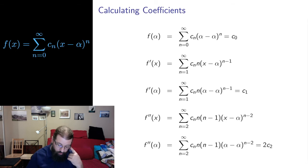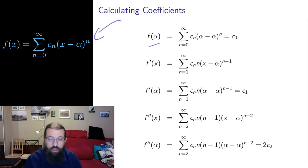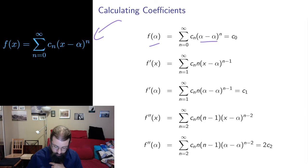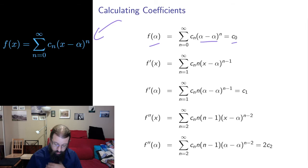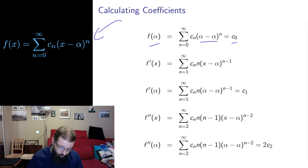Let's take a function expressed as a Taylor series — I'll leave the general form here as a reminder. If I evaluate it at alpha, I get alpha minus alpha in every exponent, which is zero for every term except the constant term. So all the higher terms go away and the only term that remains is the constant. Therefore the first coefficient C0 is given by the value of the function at the center point.